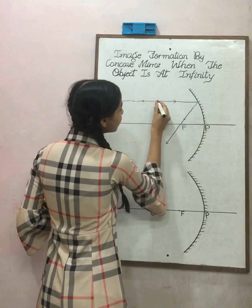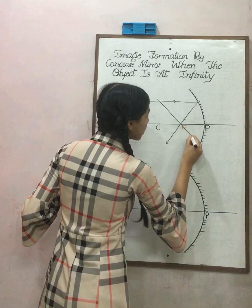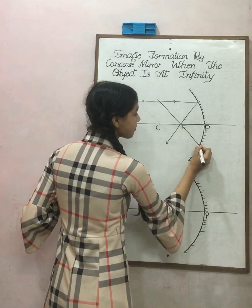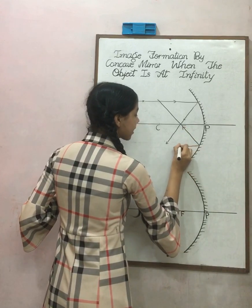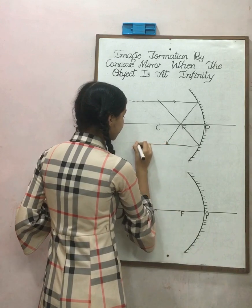And when the ray of light goes from the focus and then strikes at the mirror, then it returns back parallel to the principal axis.